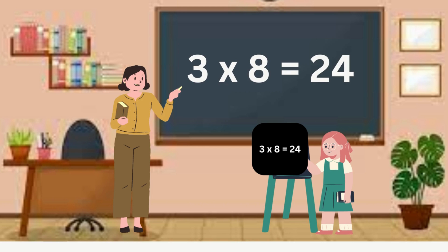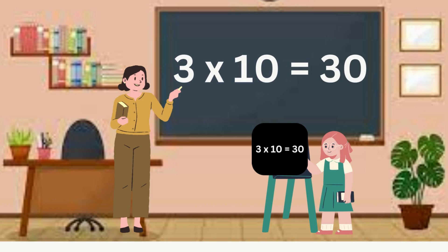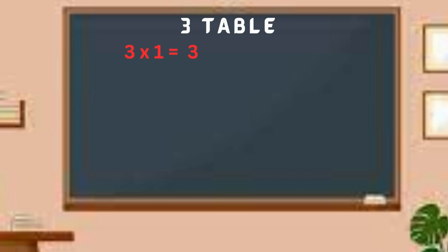Three eights are twenty-four. Three nines are twenty-seven. Three tens are thirty. Four. Three ones are three. Three twos are six.